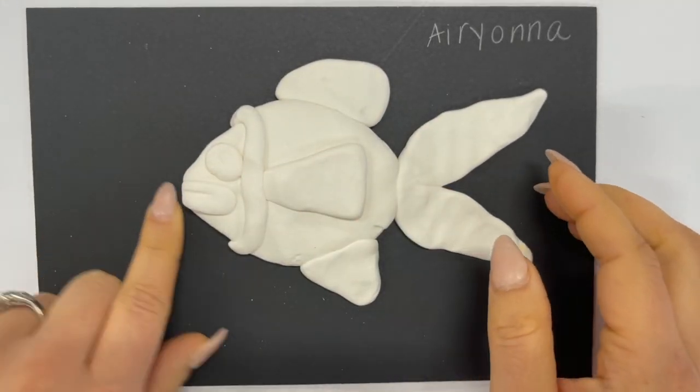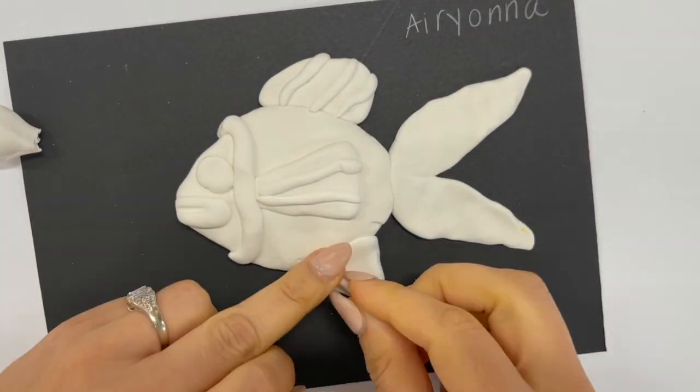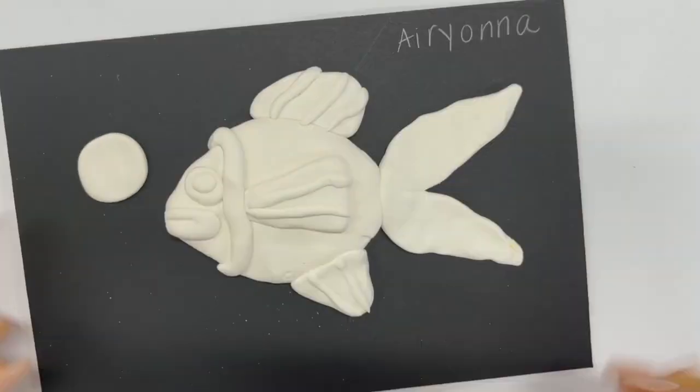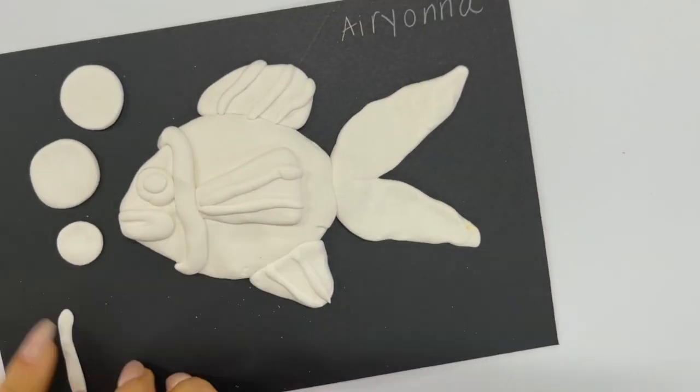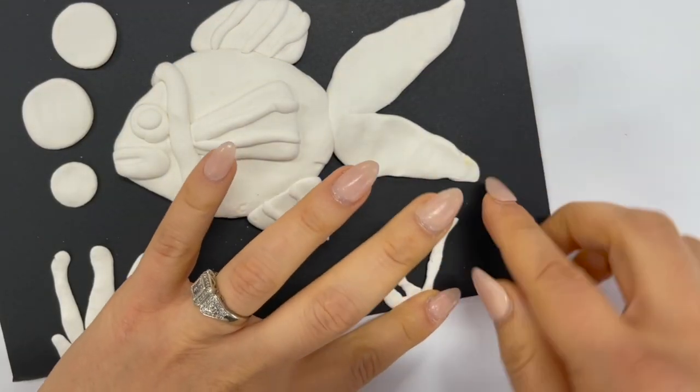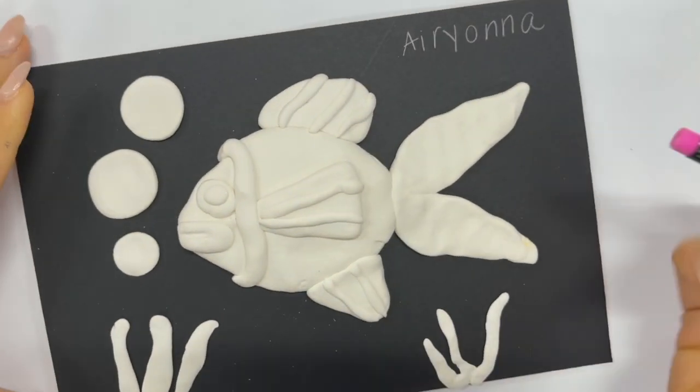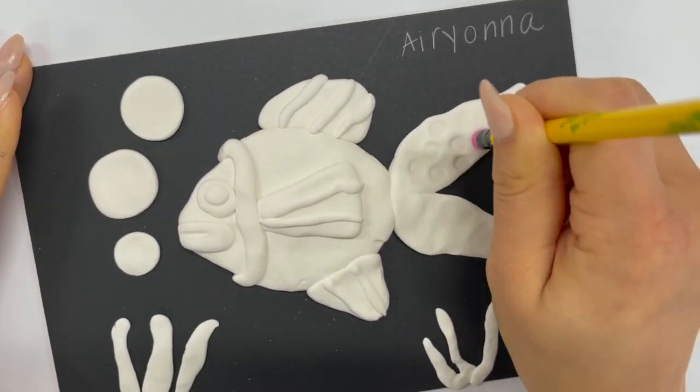I'm going to speed up the video and use up the rest of my clay to add tiny little details and seaweed and bubbles to my fish. I'm also going to use my pencil to add a little bit of texture using the drawing side of the pencil and the eraser side of the pencil.